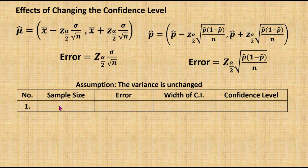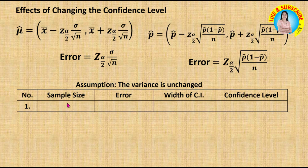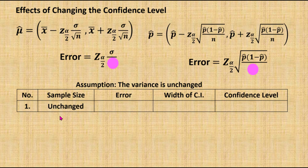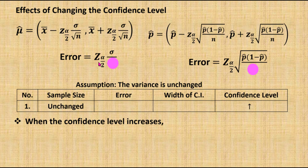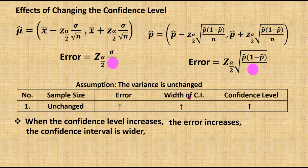Now I'm going to discuss: if the confidence level changes, what are the effects on the sample size, the estimation error, and the width of the confidence interval? If I wish to keep the sample size unchanged and the confidence level increases, the z value also increases. When the z value increases, the estimation error increases. When the estimation error increases, the width of the confidence interval also becomes bigger. Therefore, the precision of the result decreases.